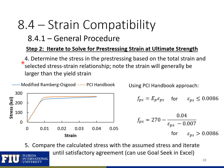The next sub-step is to determine the stress in the pre-stressing based on the total strain, using whatever stress-strain relationship we want — I'm showing the PCI design handbook approach, which is a simple equation. We then compare the calculated stress to the assumed stress from the beginning of step two. If the assumed stress equals the calculated stress, we're done and can move to step three.